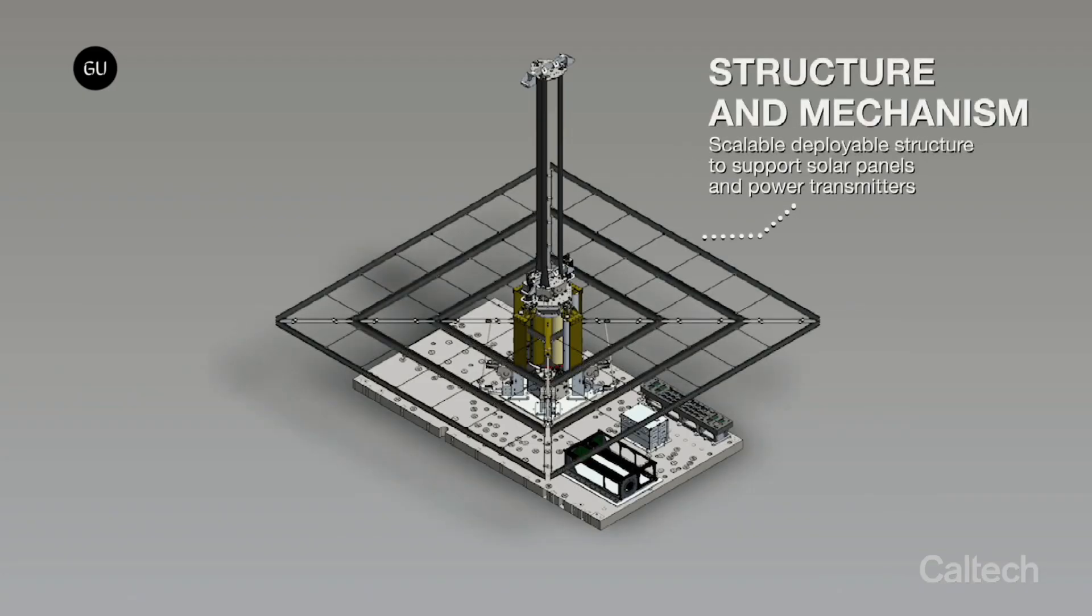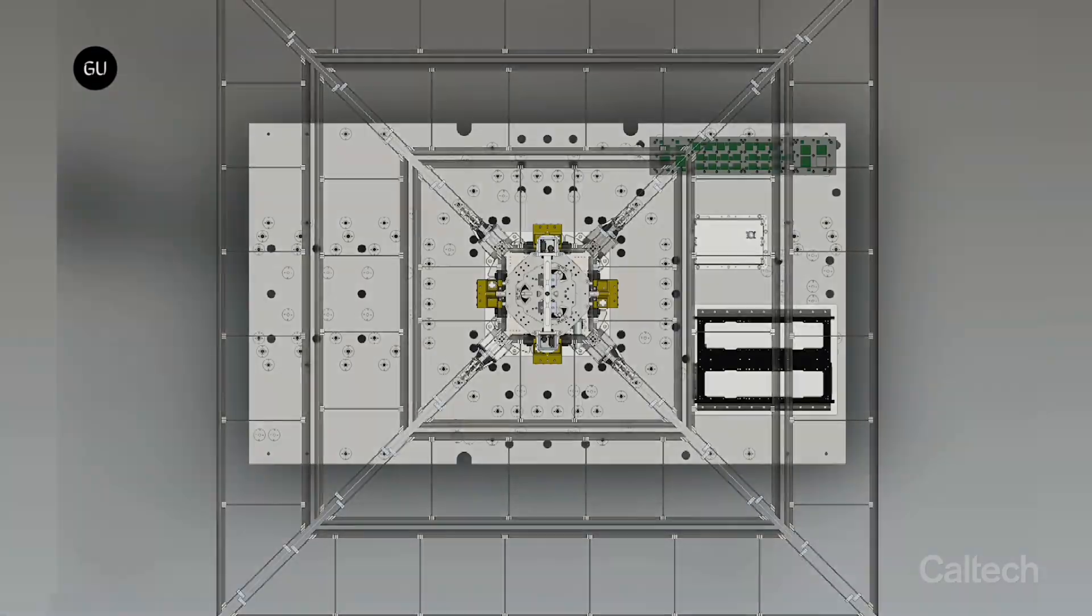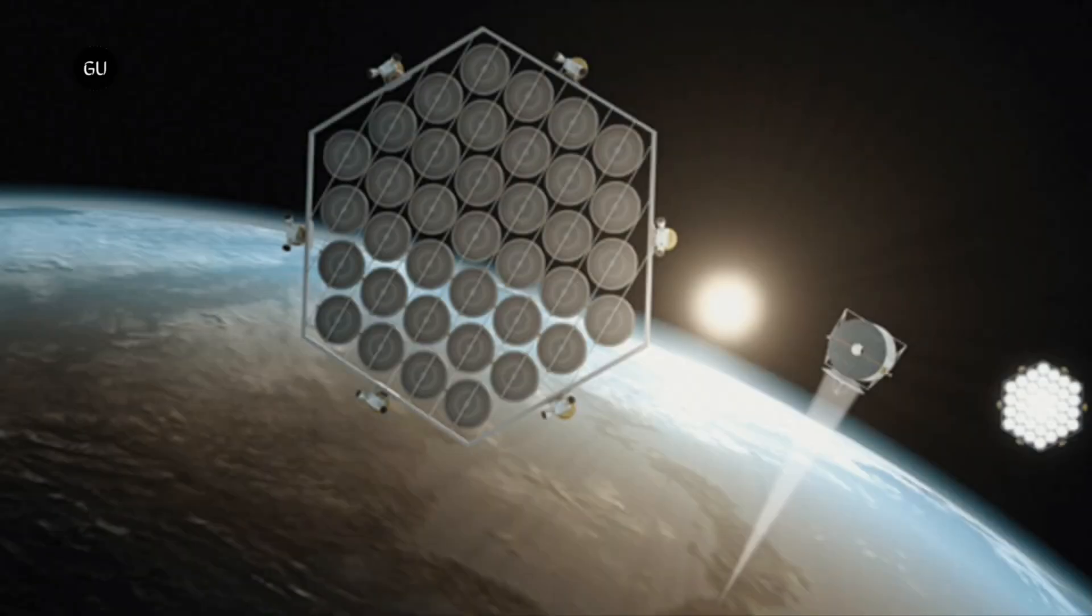In its full conception, SSPP would include a constellation of modular spacecraft deployed to space to collect sunlight, transform it into electricity, and convert it to microwaves that will be beamed over long distances to wherever it is needed.